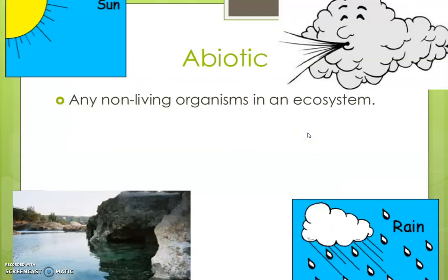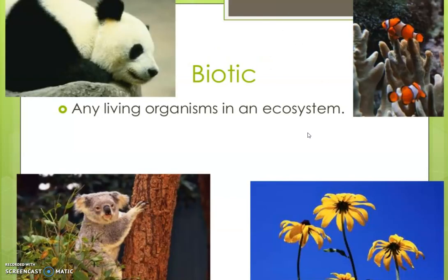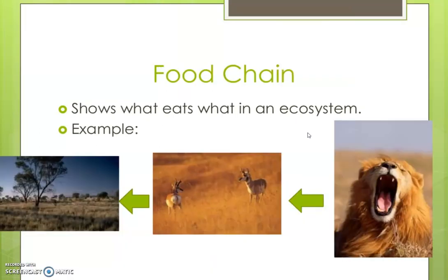Next we are going to discuss about abiotic and biotic factors. Abiotic factors are the physical factors like sunlight, water, and rainfall. Biotic factors are all the living organisms in an ecosystem.